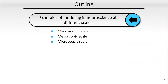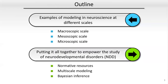Or it helps us also if the system is more black box or gray box, as it's often the case in biology, it helps us start to gain some more insight into the inner working of the system. My talk will really be centering around modeling in neuroscience and it will be separated into a big part: one that is more retrospective, where I will be presenting examples of modeling in neuroscience at different scales. And the second part is more prospective, and I will discuss how I would propose to put it all together to better empower the study of neurodevelopmental disorders.